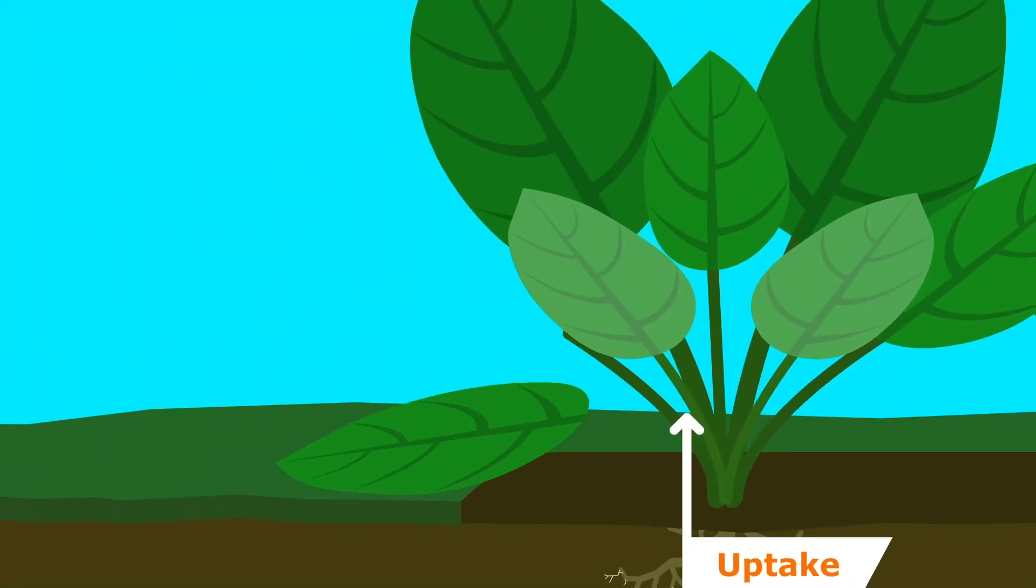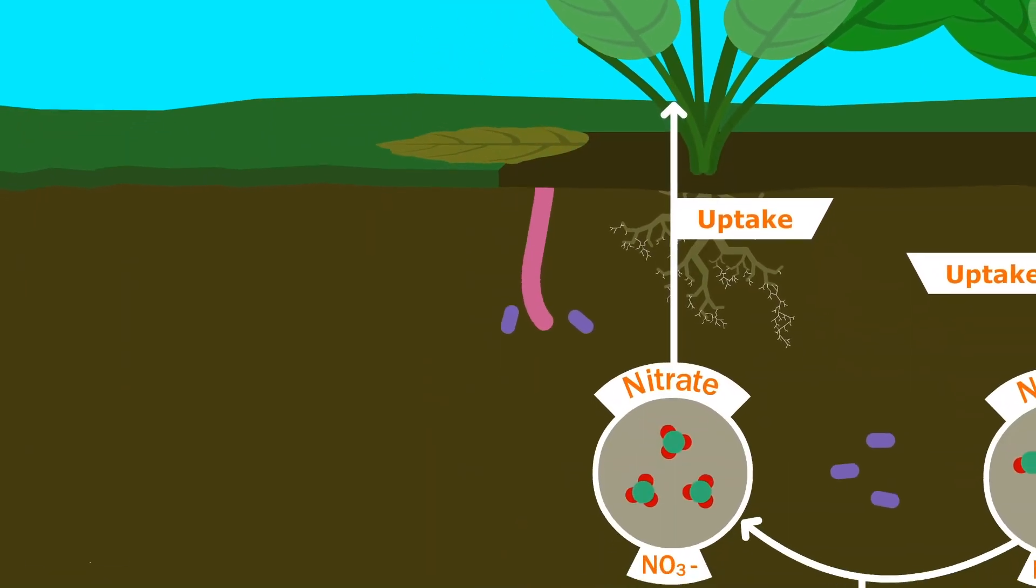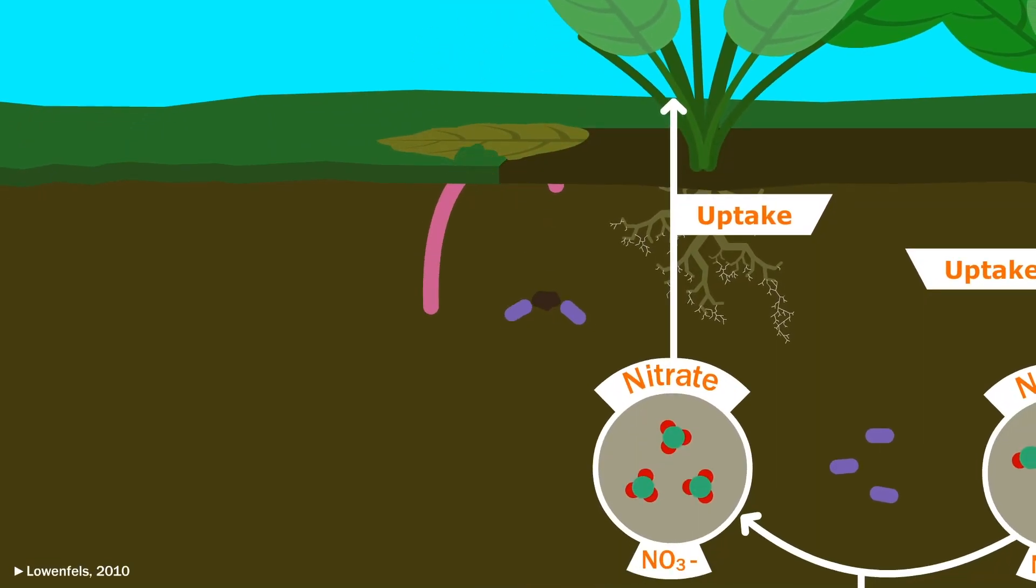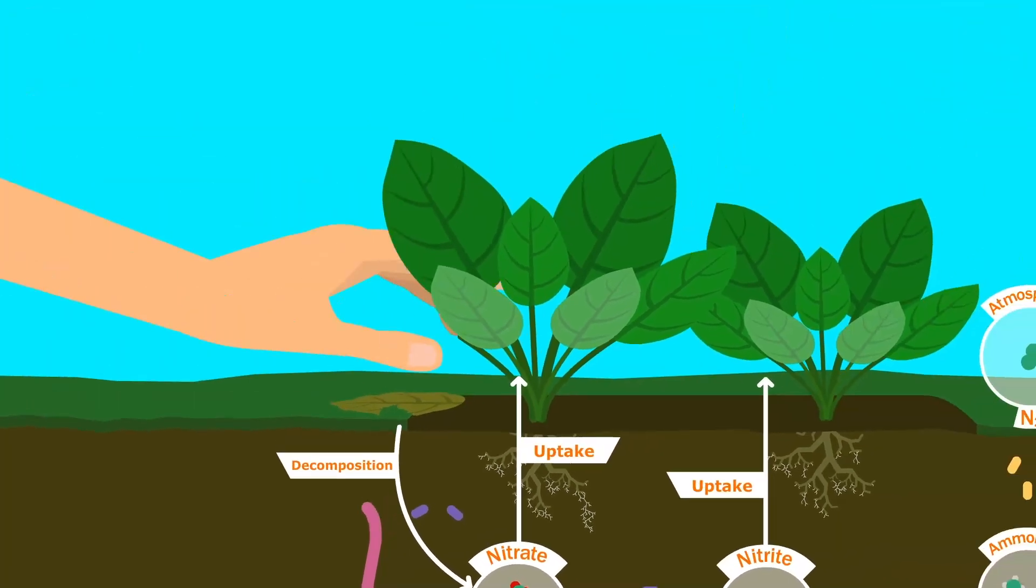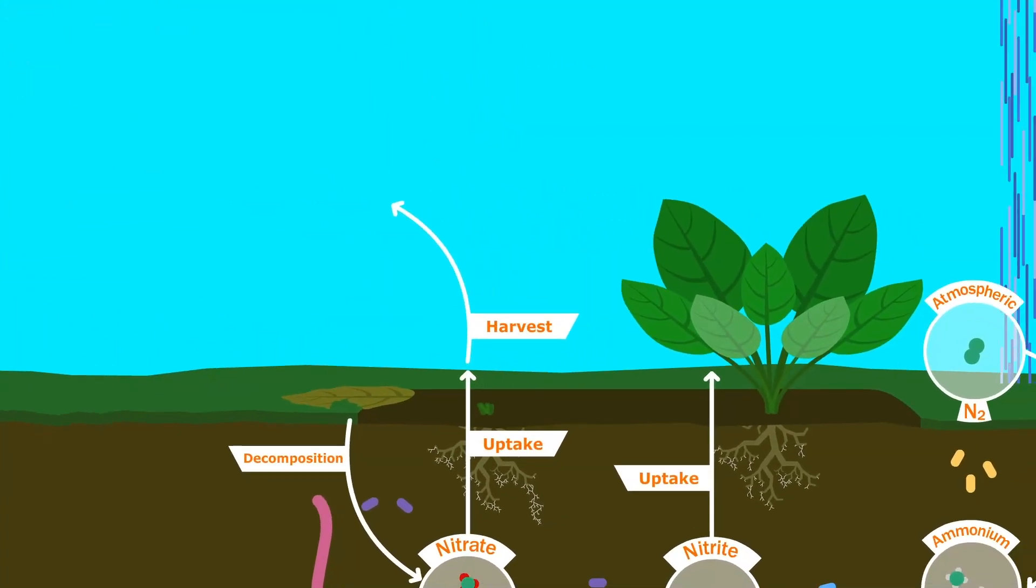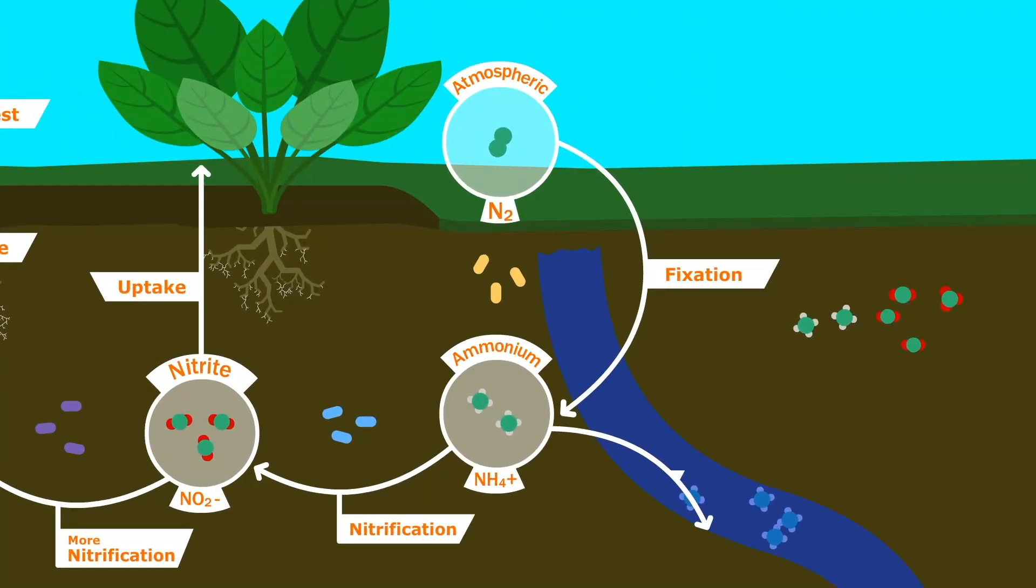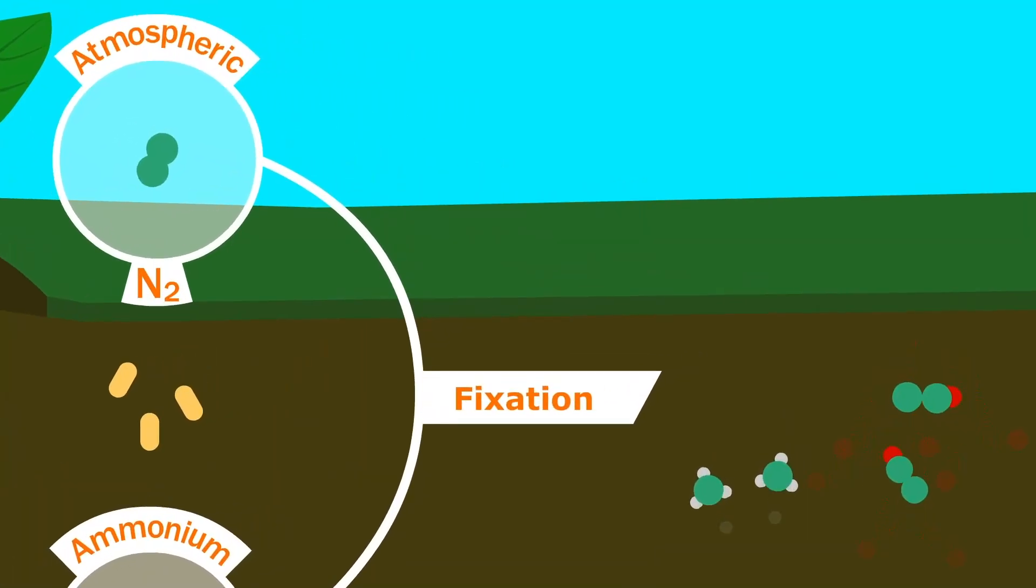Dead plant material is also rich in nitrogen and gets brought down with the help of worms, whose poop is a delicacy among nitrifying bacteria. Some of the ways nitrogen exits the soil is when the crop is harvested, when water carries it away, or when it becomes gaseous and returns to the atmosphere.